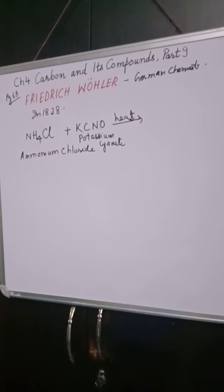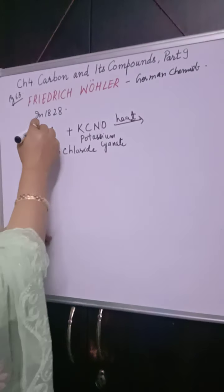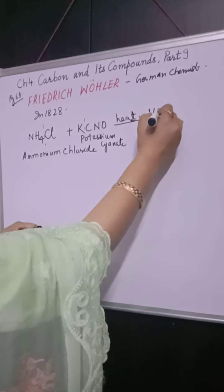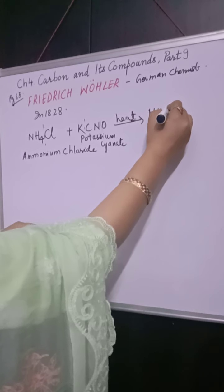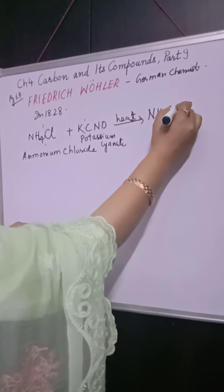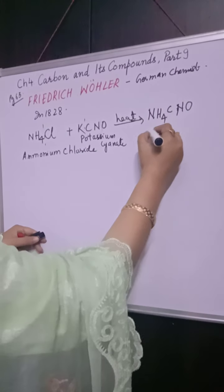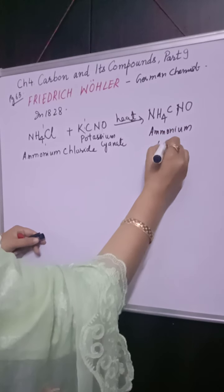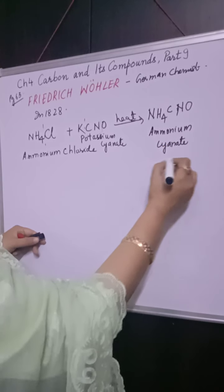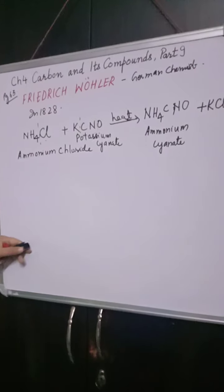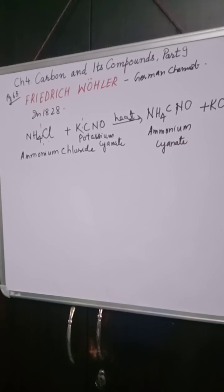On heating, a double displacement reaction occurred. The products formed were ammonium cyanate, NH4CNO, and potassium chloride, KCl (K⁺Cl⁻). The ammonium cyanate formed is unstable, and on further heating it undergoes rearrangement and changes to urea.